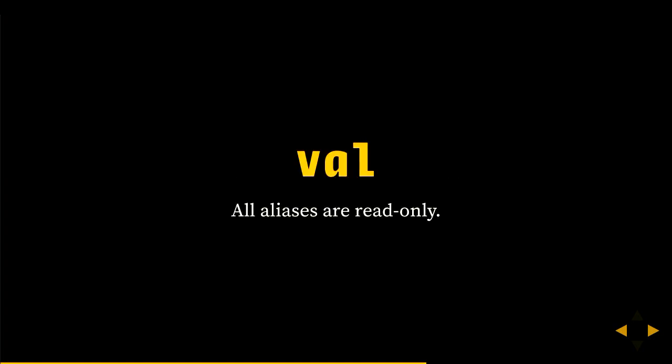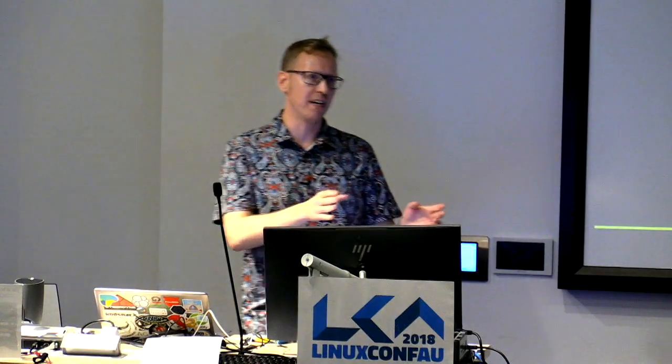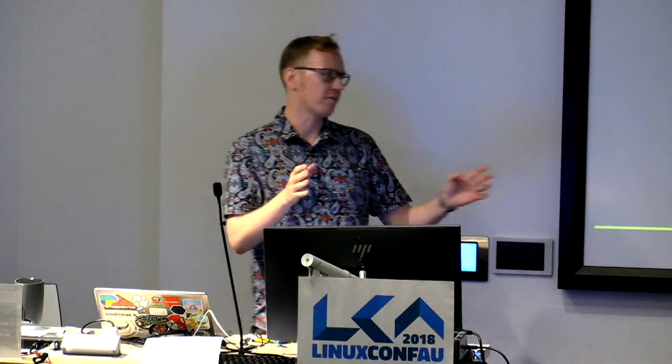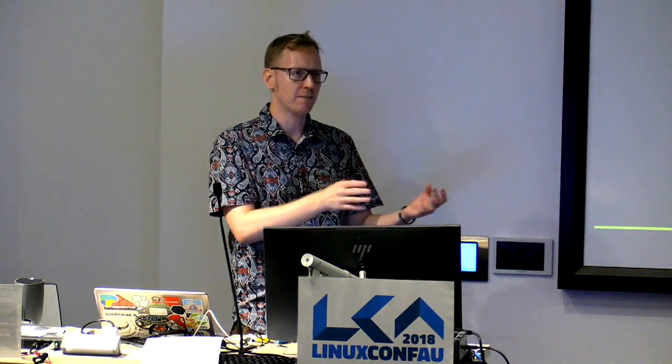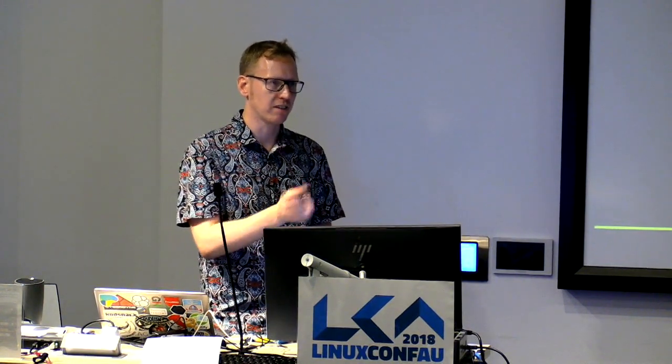The first reference capability is val. A val reference is read-only, and it also guarantees that all other references to that data are also read-only. So if you have a val reference you know no one can write to that data. This makes it safe to share between actors — you can pass it in a message. Constants like numbers and constant strings are all val.